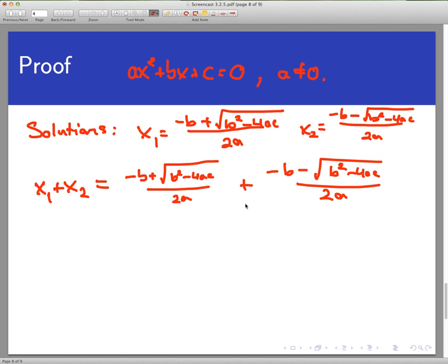Now here, I can just do a direct calculation. I have common denominators, so why don't I combine the numerators? That would be -b + √(b² - 4ac) + another -b, I'll parenthesize that, minus √(b² - 4ac). And this is all over 2a again.